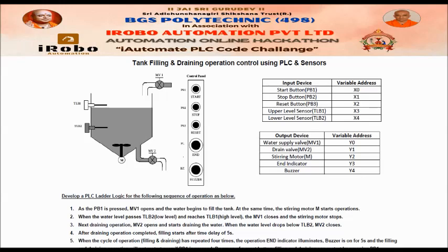In total, there are five inputs and five outputs in this problem statement. Please maintain the same variable addresses — for example, start button or PB1, stop button, reset button — the names should remain the same as given in the problem statement. Do not change to short forms like S1 or S2. Strictly follow the variable names as indicated, so that it is easy for evaluation.